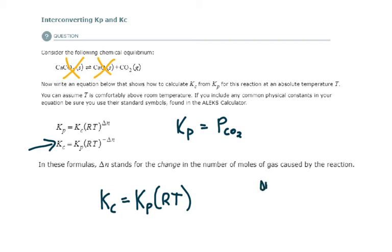Delta N, again, is moles of gaseous products minus moles of gaseous reactants. Remember that these have to be gases.